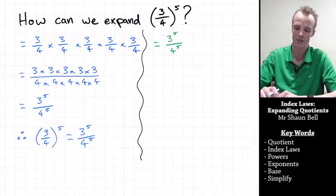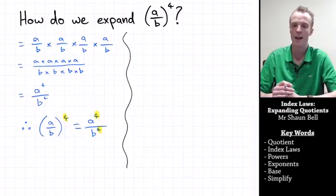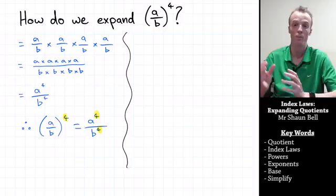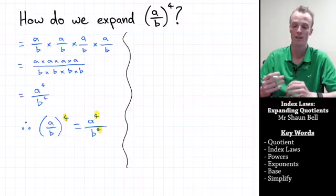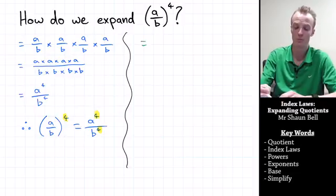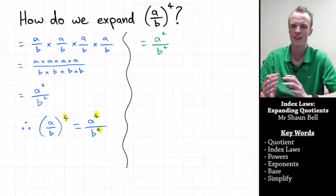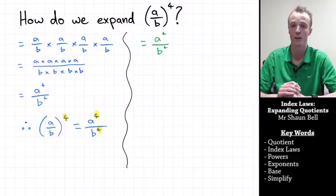In the second problem, we had the quotient of a over b all raised to the power of 4. Our law says that if we raise a quotient to a power, we raise that power to both the numerator and the denominator. So that's going to be equal to a raised to the power of 4 over b raised to the power of 4. This is already in simplest form, and we've arrived at the same answer as before.